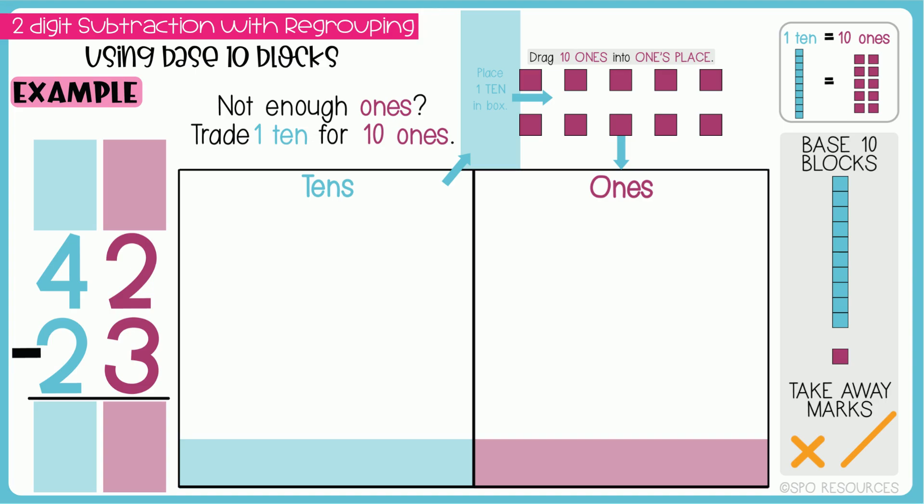First, let's look at our problem on the left-hand side. 42 minus 23. I will start by moving the base 10 blocks onto the place value mat to represent the number 42.